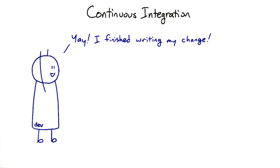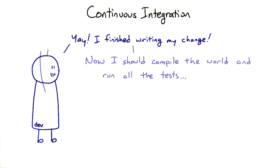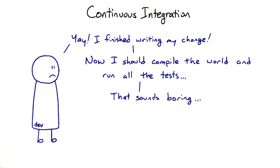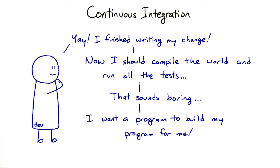Continuous integration means that whenever you check in new code, it gets integrated and built. We're not going to do that by hand — running the compiler and test suite is a job for a program. And there are a lot of pieces of software to do this.